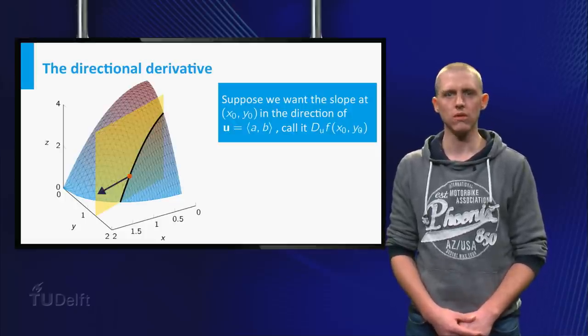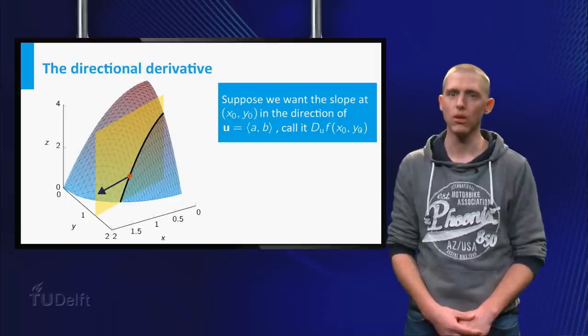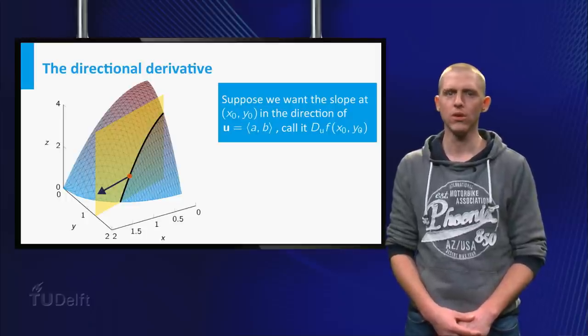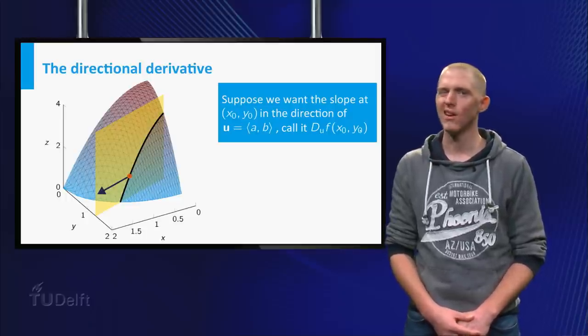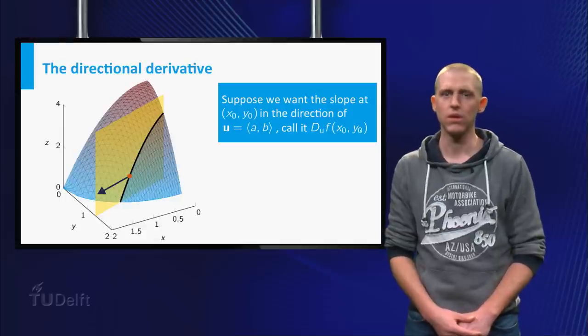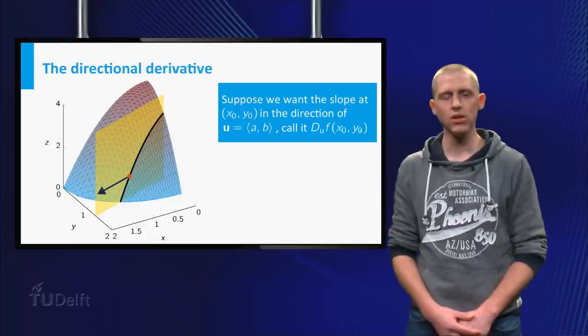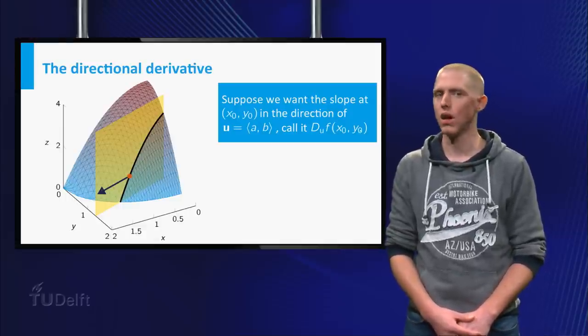Similar to the normal partial derivatives, you can draw a vertical plane parallel to u and through the point x0, y0. Again you get a curve, the intersection of this plane and the surface z is equal to f of x and y.